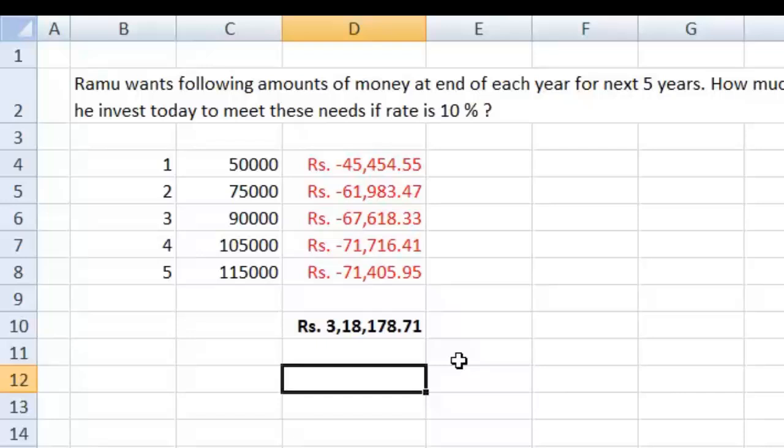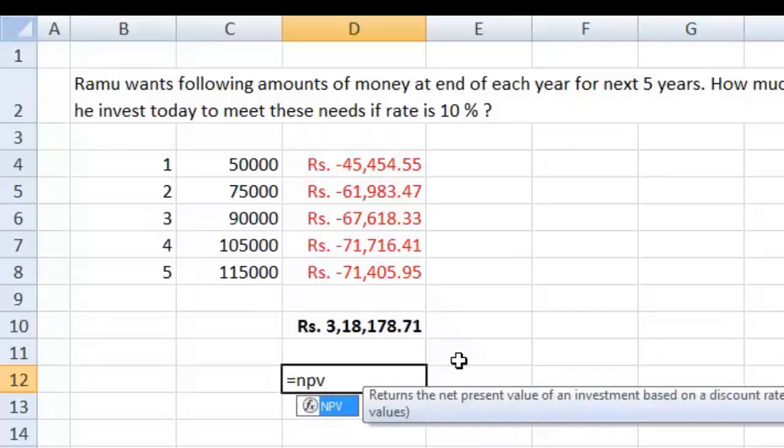Now, NPV stands for net present value. This function is also a function to find PV, not something different than PV. But it is used in precisely these places where an amount can't be classified as a single future value or as a PMT. So let me demonstrate the usage: equals NPV, net present value. Open the bracket.